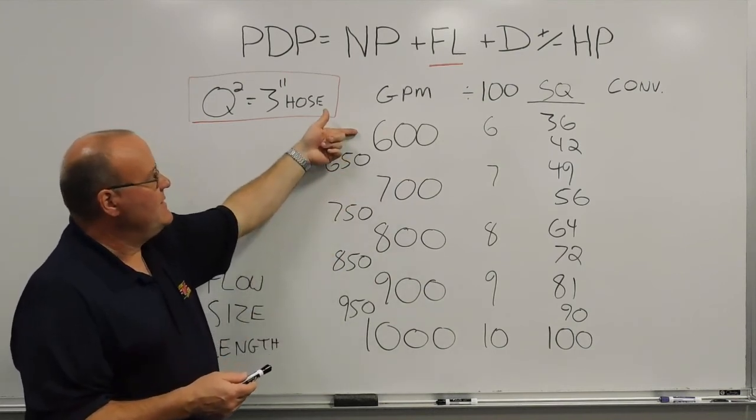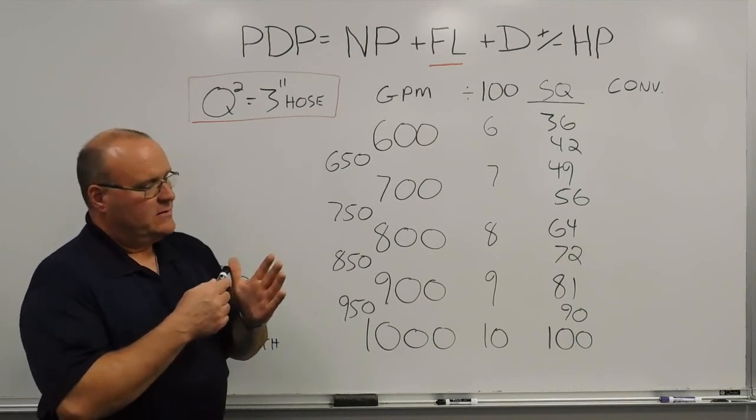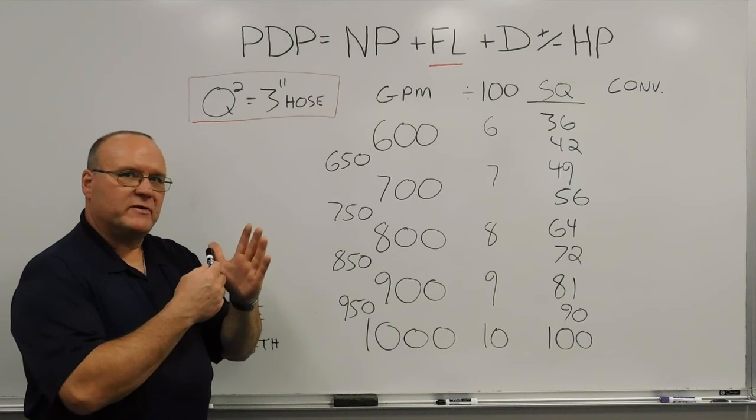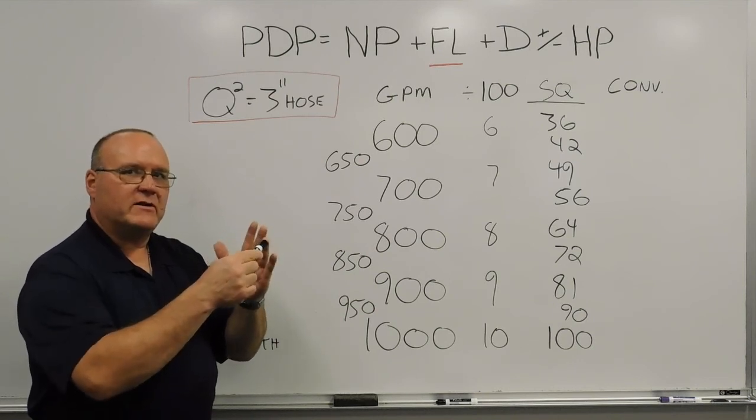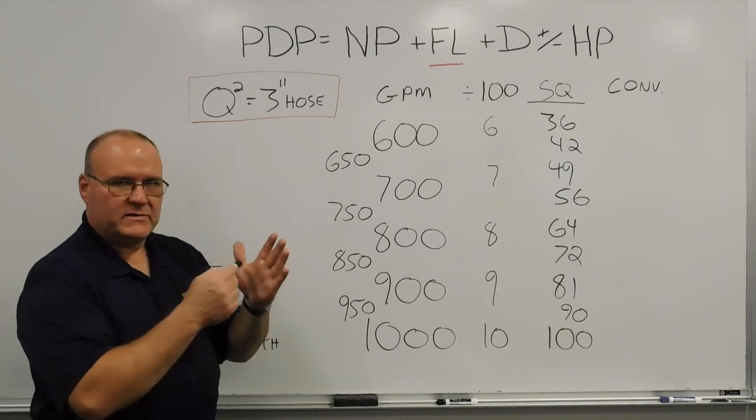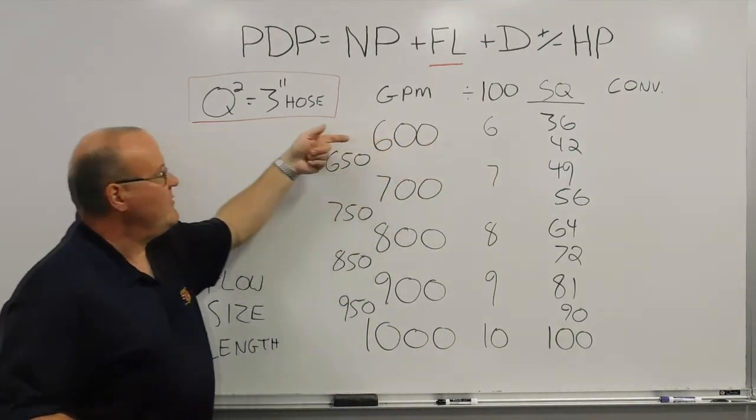So 600 gallons a minute to get to a 3 inch hose number for friction loss, you do the same thing from 600 to 1000, you just add the numbers to the finger, 600, 700, 800, 900 or 1000. So 600 gallons a minute, 6 times 6 would give me 36 pounds of friction loss if that were 3 inch hose.